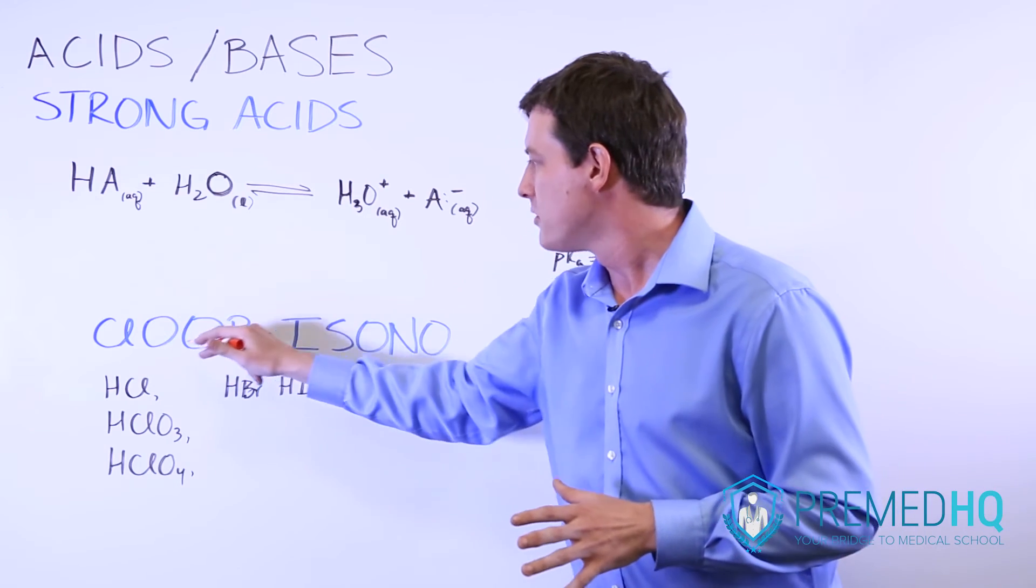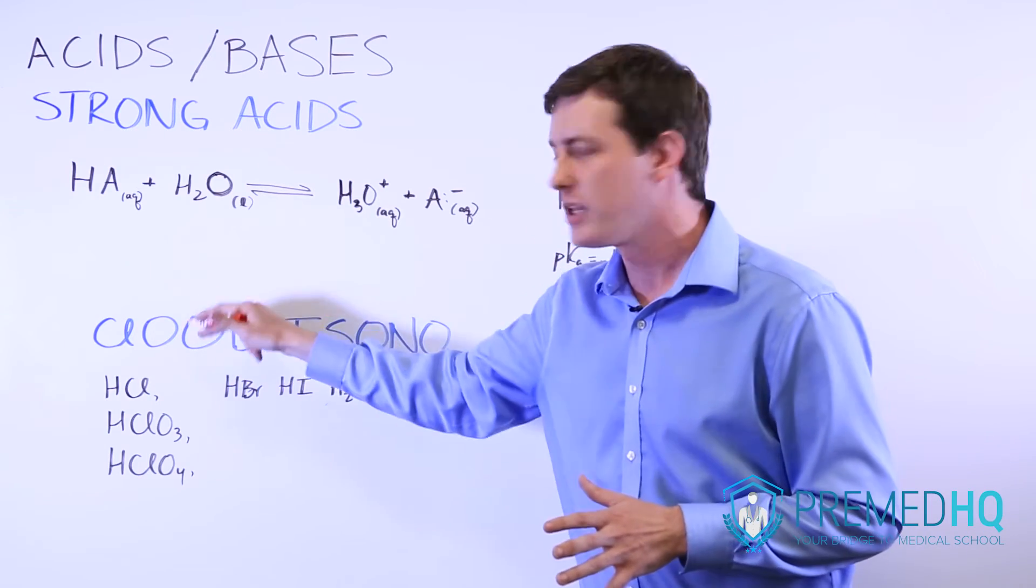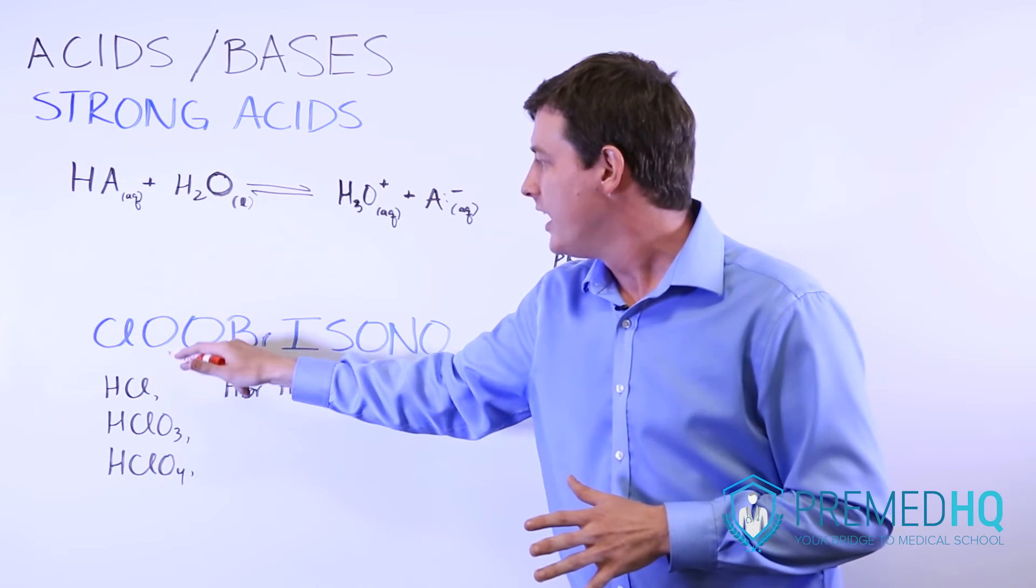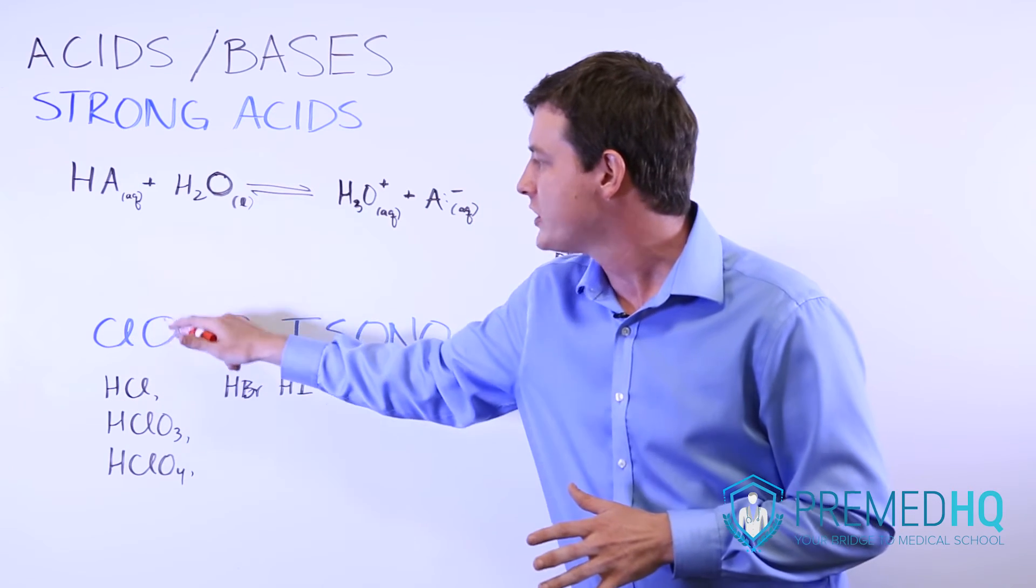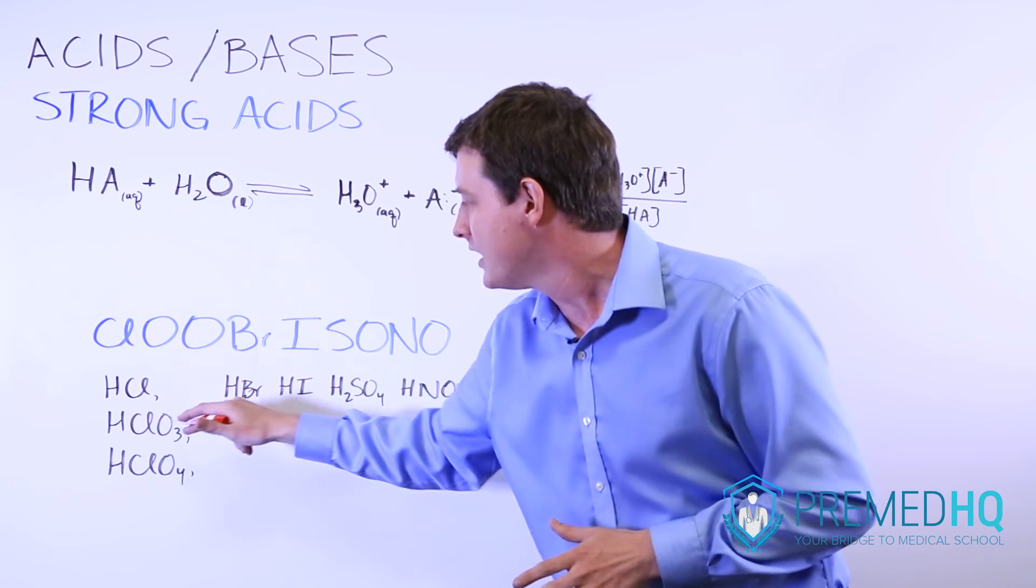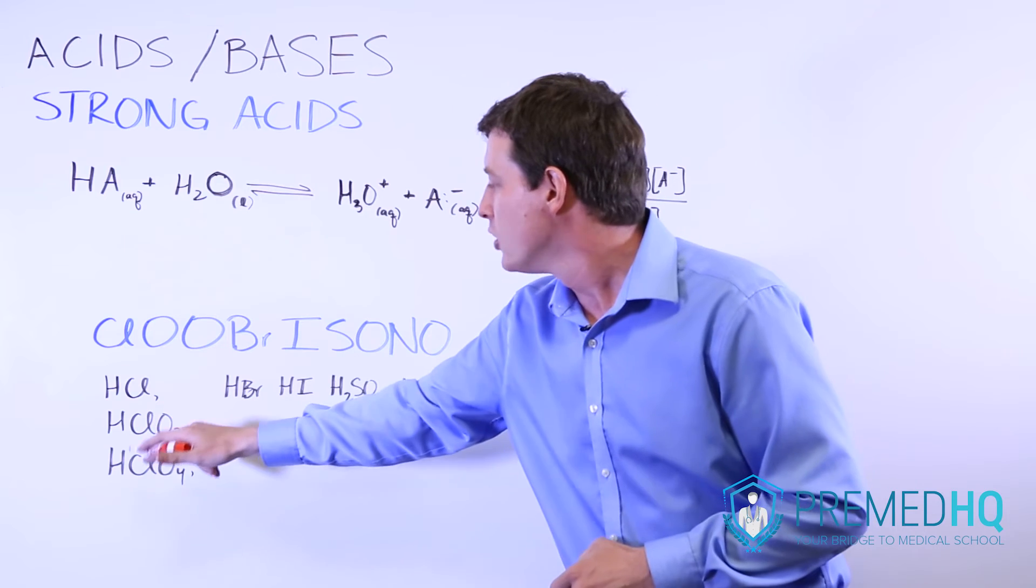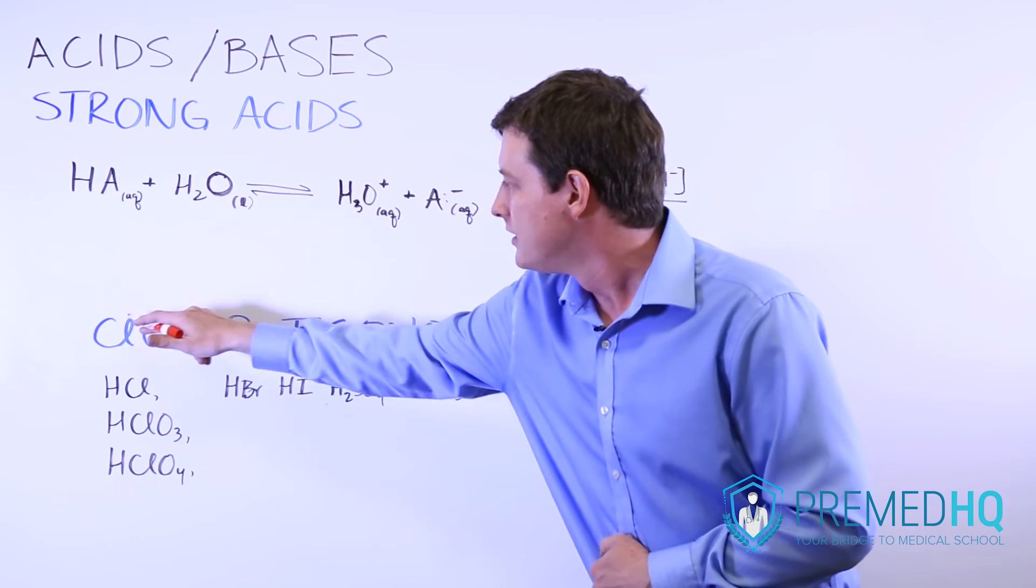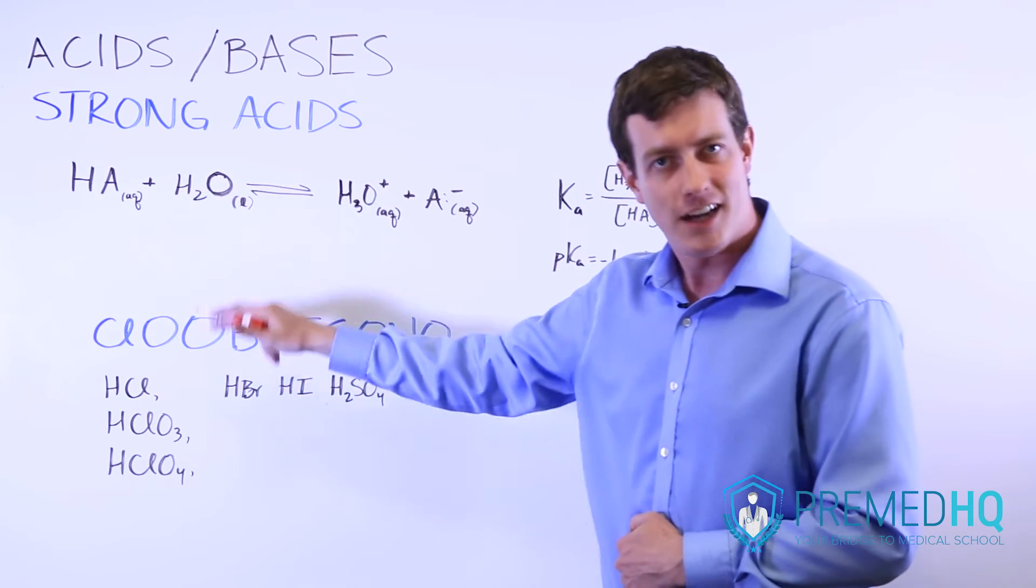Clubrisono essentially represents all the things that are paired with hydrogen. So you have HCl, hydrochloric acid, and then these two O's are ClO species. So you have chloric acid, HClO3, and perchloric acid, HClO4. Those are the Cl, the ClO, and the ClO.